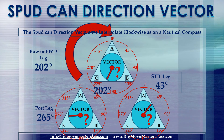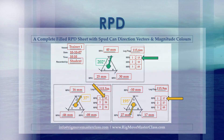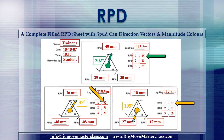The spud can direction vectors are interpolated clockwise as on a nautical compass. Bow or forward leg: 202 degrees. Starboard leg: 43 degrees. Port leg: 265 degrees. A complete filled RPD sheet with spud can direction vectors and magnitude colors is shown.